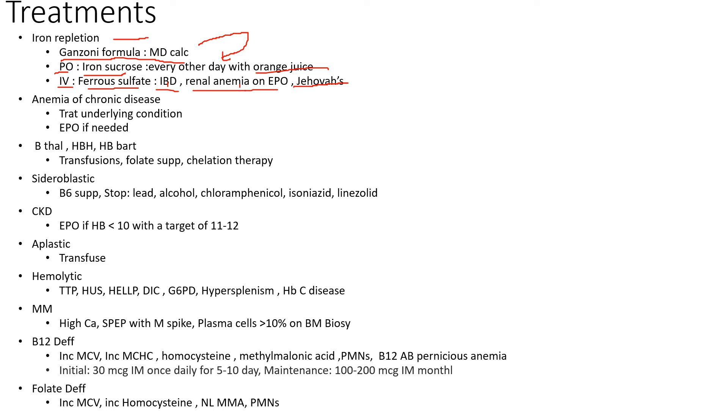Anemia of chronic disease, you want to treat the underlying condition, and you're going to start EPO on these people most of the time. Beta thal and thalassemia patients, you want to transfuse, folic supplementation, and chelation therapy.